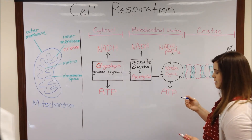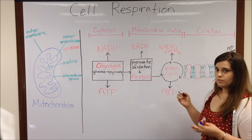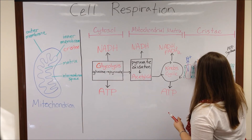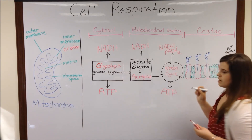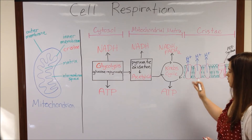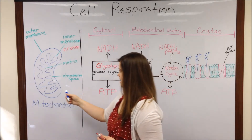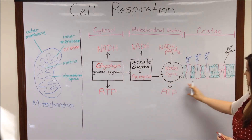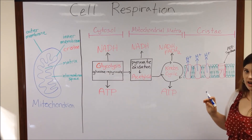At the same time, energy is being taken from those high energy electrons and it's being used to pump protons across the membrane. Protons are actually hydrogen ions. The effect here is to get a lot of hydrogen ions building up in the intermembrane space. Up here is the intermembrane space, down here is the matrix, and this is that inner membrane of the mitochondrion.